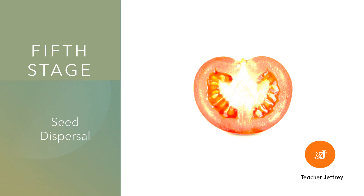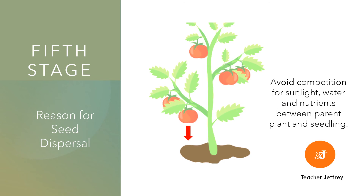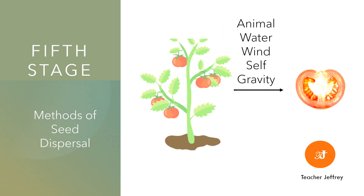The fifth stage is seed dispersal. The goal of this stage is to transfer the seed away from the parent plant. If the fruit containing the seed falls to the ground and germinates into a new plant, the area where the seed grows will compete with the parent plant for sunlight, water, and nutrients. So seed dispersal is the spreading of seeds away from the parent plant. Methods of seed dispersal are animal dispersal, water dispersal, wind dispersal, self-ballistic, and by gravity.